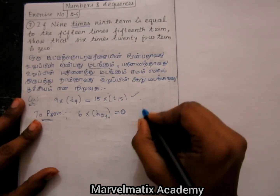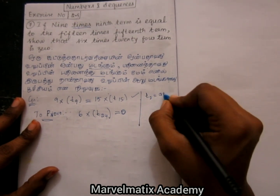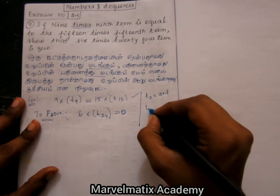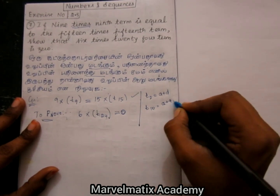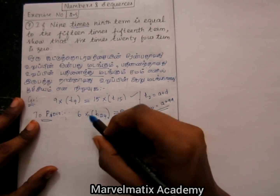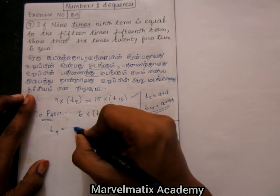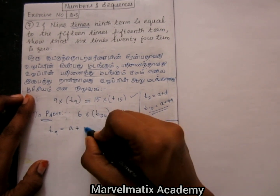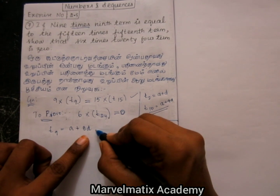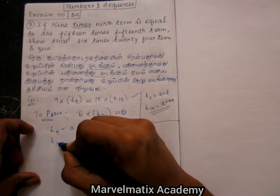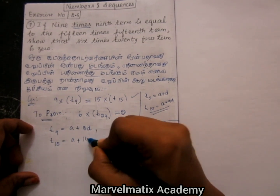T2 is a plus d. T10 is a plus d. This concept: a plus d — so this is the concept. T9 is a plus d. T15 is a plus d.